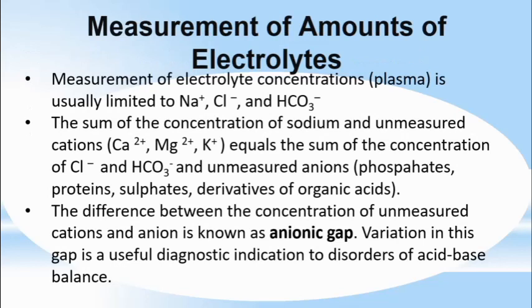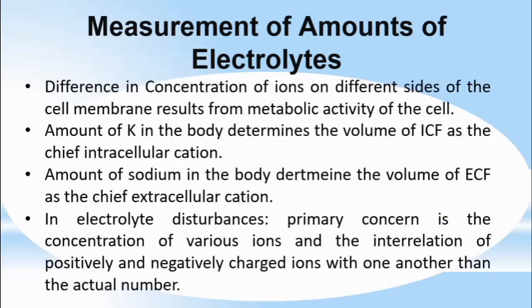How are electrolytes or their concentrations measured? The measurement of electrolyte concentration is usually limited to sodium, chlorine, and bicarbonates only. The sum of the concentration of sodium and unmeasured cations — calcium, magnesium, and potassium — equals the sum of the concentration of chloride, bicarbonates, and unmeasured anions such as phosphates, proteins, sulfates, and derivatives of organic acids. The difference between the concentration of unmeasured cations and anions is known as the anion gap. Variation in this gap is a helpful diagnostic indication of disorders of acid-base balance.